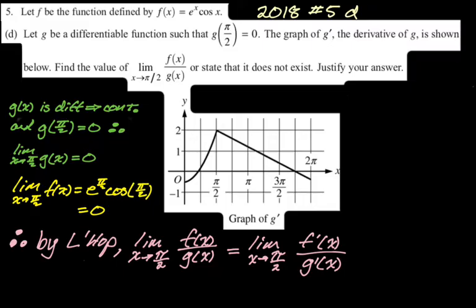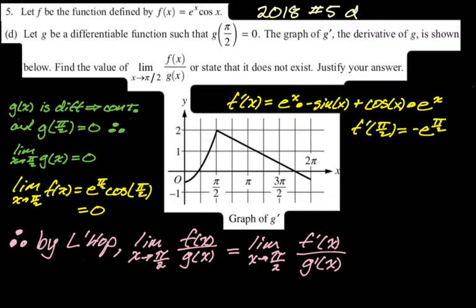Now I need to find F' and G'. F(x) is a known function, so I can find its derivative using the product rule. I find that F'(π/2) = −e^(π/2), which is not 0 — so we're not going to get another indeterminate form; we'll get an answer. For G', we need to look at the graph of G' that was provided. At x = π/2, the graph gives us G'(π/2) = 2. So the final answer is −e^(π/2)/2.